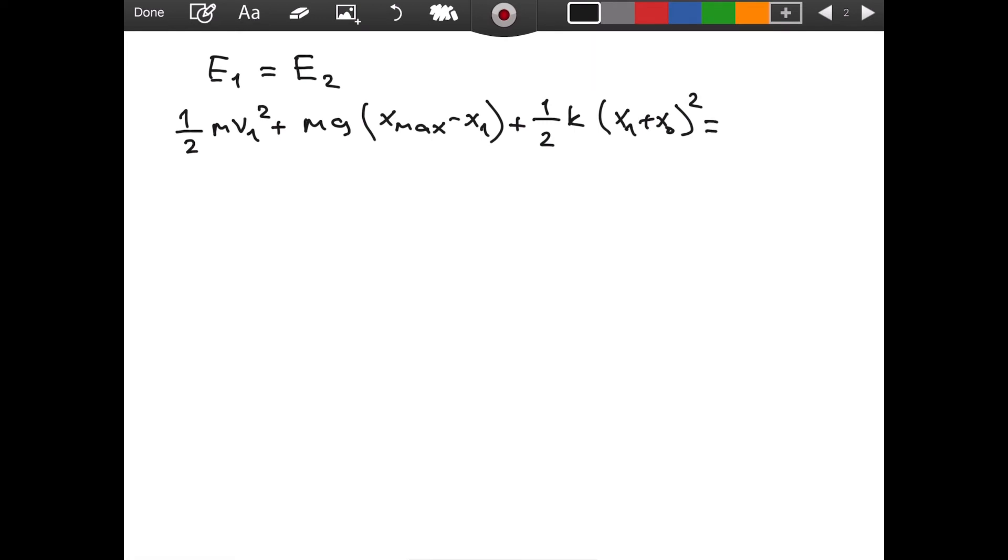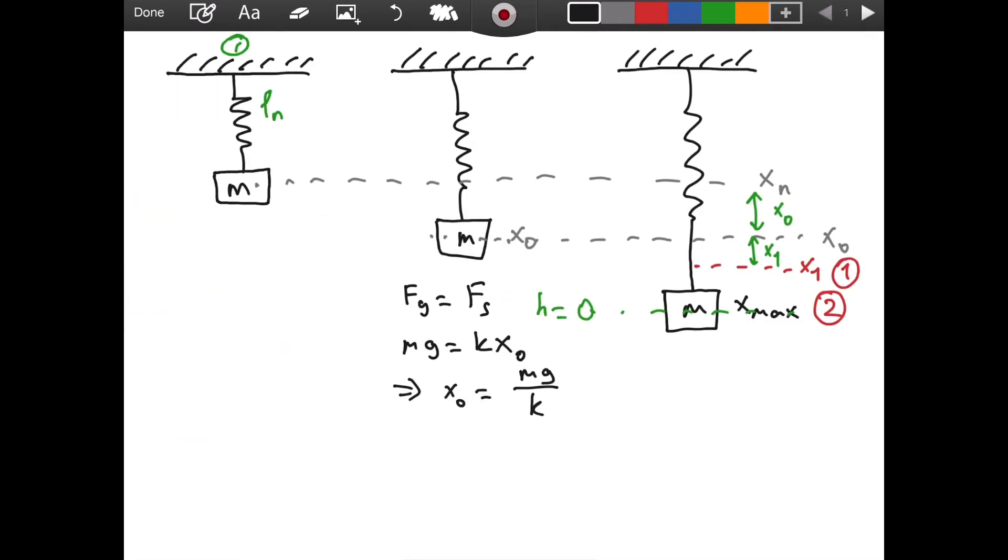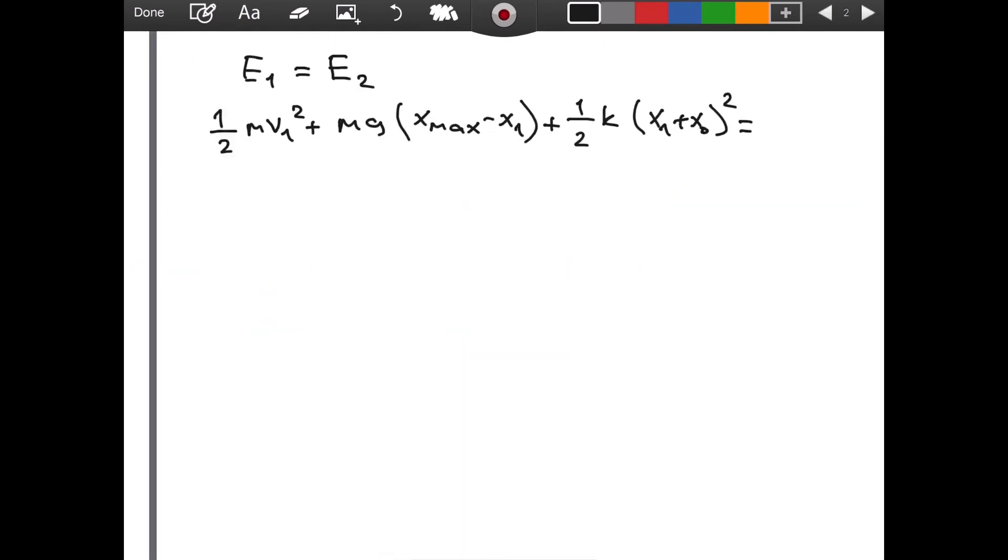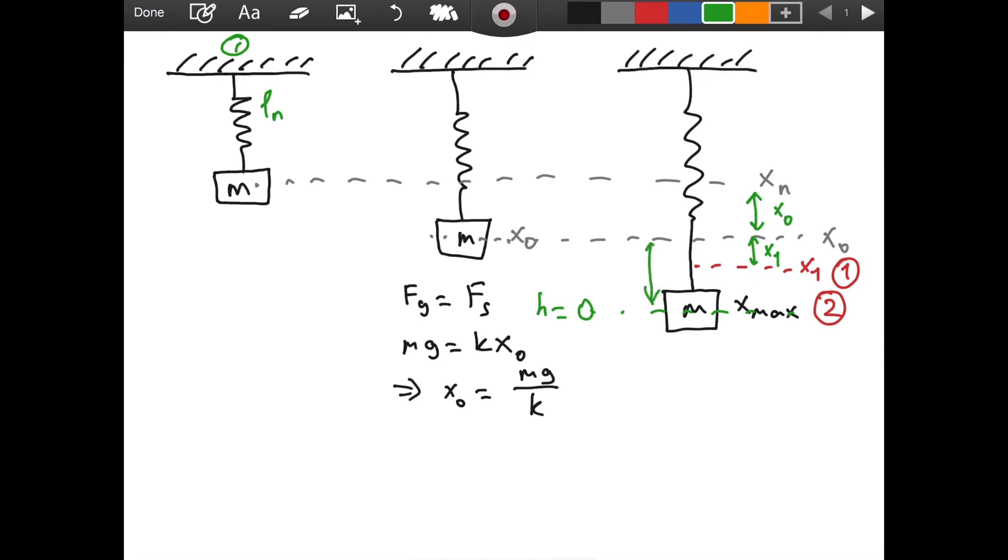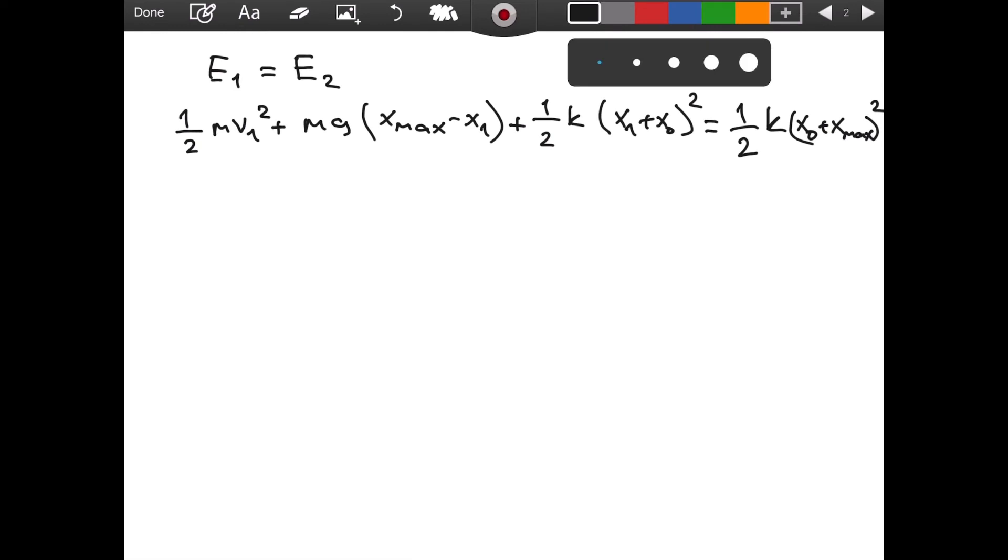And this will be equal to the energy at point 2, which is equal to, there is no gravitational potential energy if we choose height as 0 for that point, there is no kinetic energy because x_max is the turning point. The mass comes to an instantaneous stop and then it will go upwards. So the kinetic energy is 0 due to the fact that the speed is 0. There is only an elastic potential energy left. And that is in the form 1/2 k, x0 plus x_max squared. And again you can see this from the diagram. This is x_max. And when we sum x0 and x_max, we get the total stretch from the natural length.